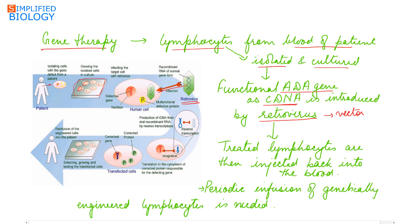A retrovirus is used as the vector to introduce the functional ADA gene into the lymphocytes, so that the ADA gene can be integrated into the genome of the lymphocytes. These treated, genetically engineered lymphocyte cells are then injected back into the body of the patient.